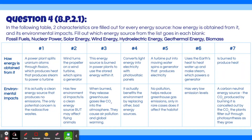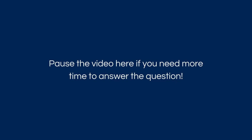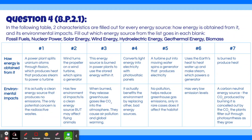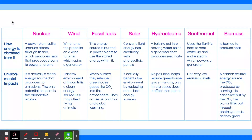Question 4. In the following table, two characteristics are filled out for every energy source — how energy is obtained from it and its environmental impacts. Fill out which energy source from the list goes in each blank: fossil fuels, nuclear power, solar energy, wind energy, hydroelectric energy, geothermal energy, and biomass. You'll definitely need to pause the video for this question. The answers are: first nuclear, second wind, third fossil fuels, fourth solar, fifth hydroelectric, sixth geothermal, and seventh biomass. If you got that right, go ahead and skip to the next timestamp. Otherwise, let's go through and look for keywords that tell us which energy source each column represents.